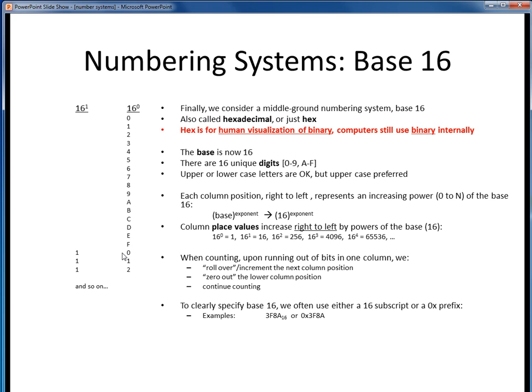The other new thing with hex is that to clearly specify base 16, if it isn't already obvious from the context, we'll use either a small 16 subscript or more typically a 0x prefix in front of the number. Other than that, decimal, binary, and hex are just three different numbering systems having three different base values and three different sets of allowable digits.